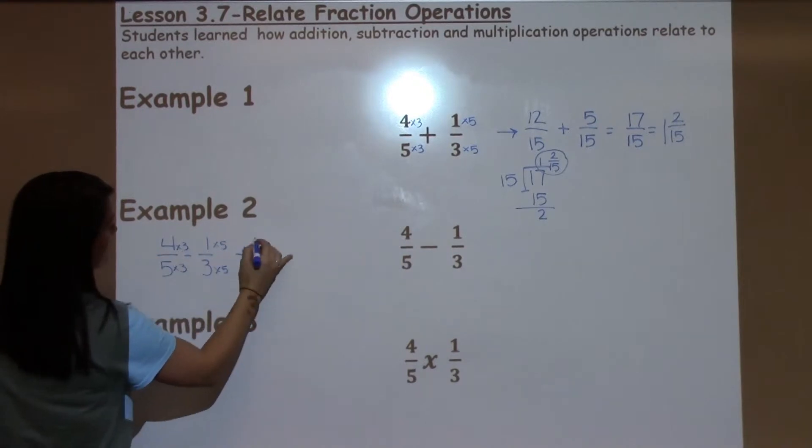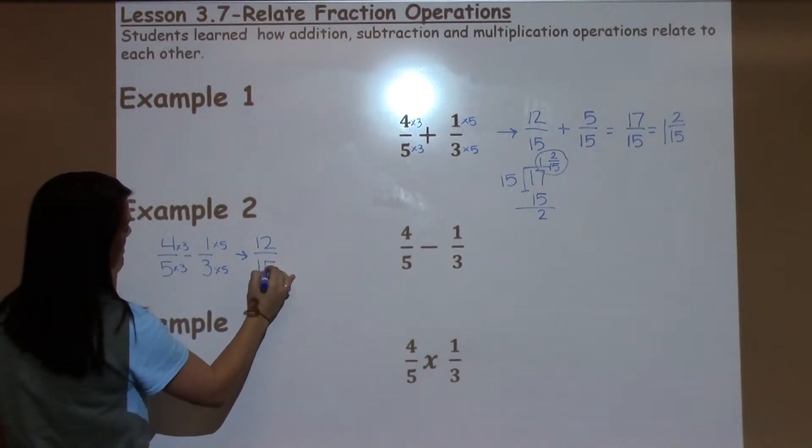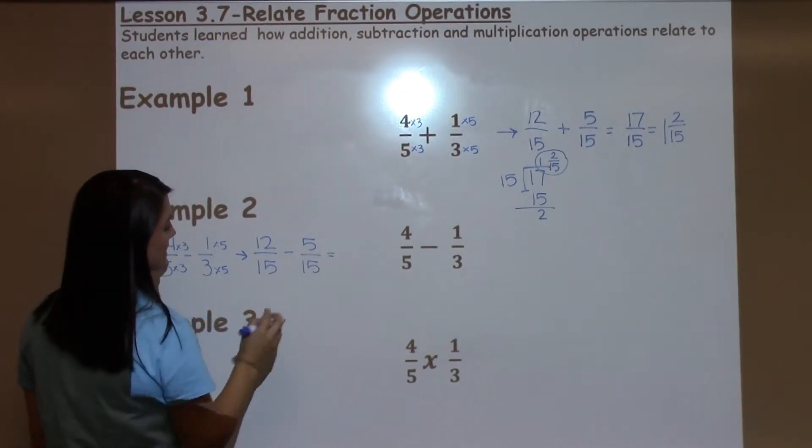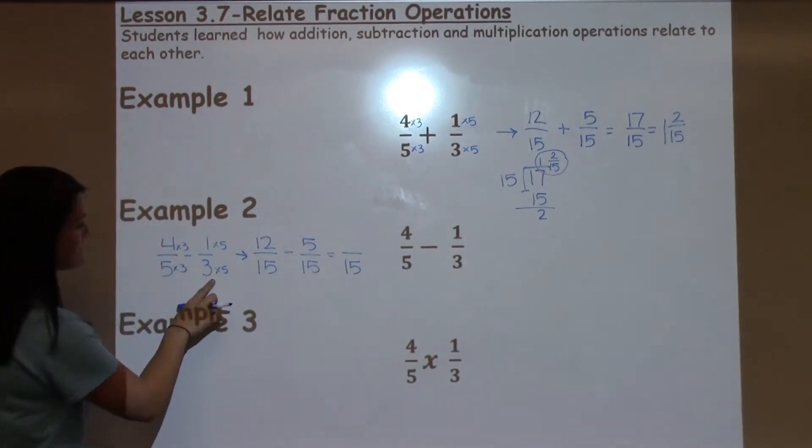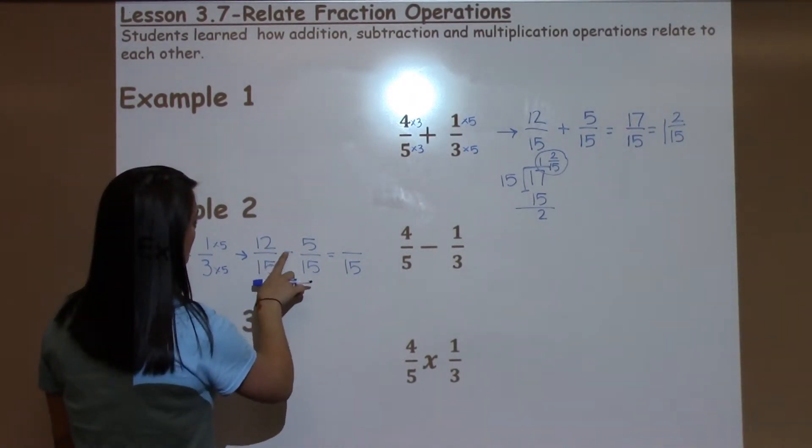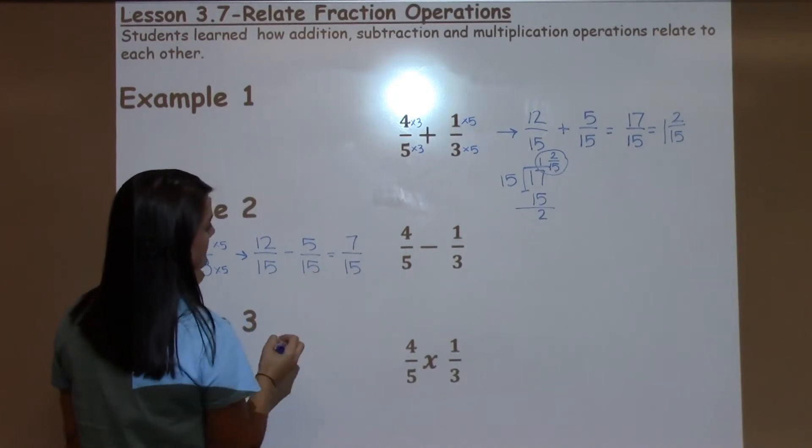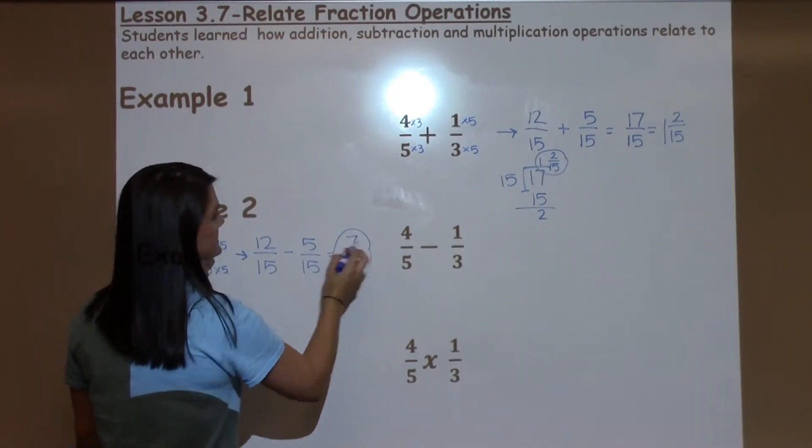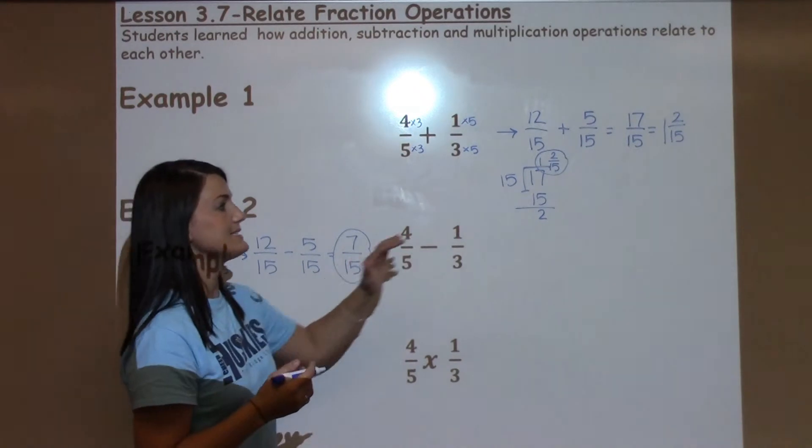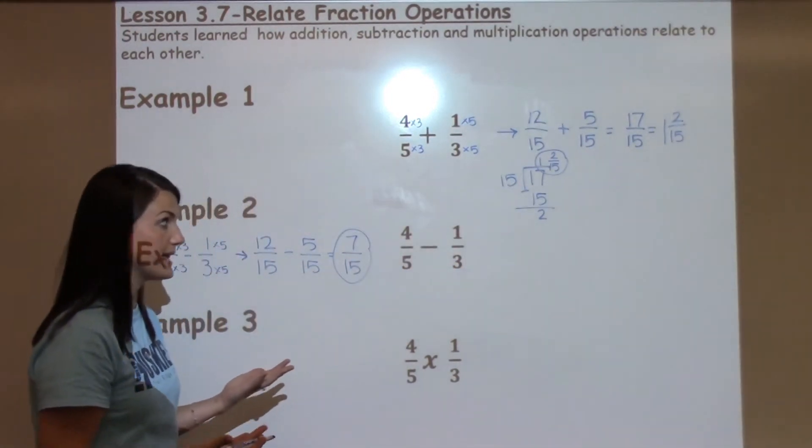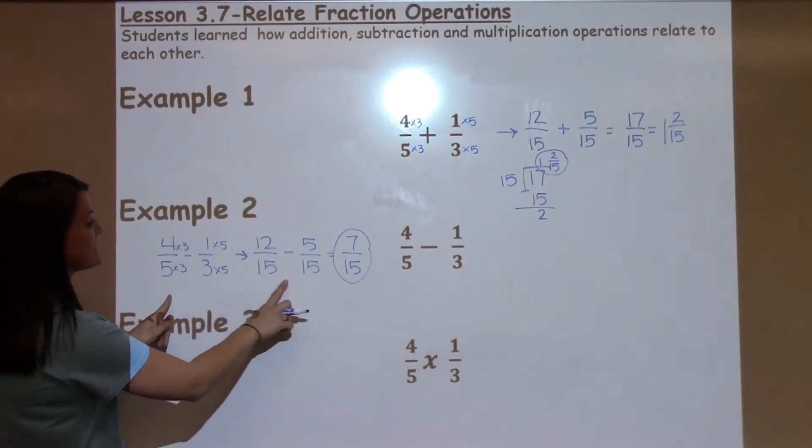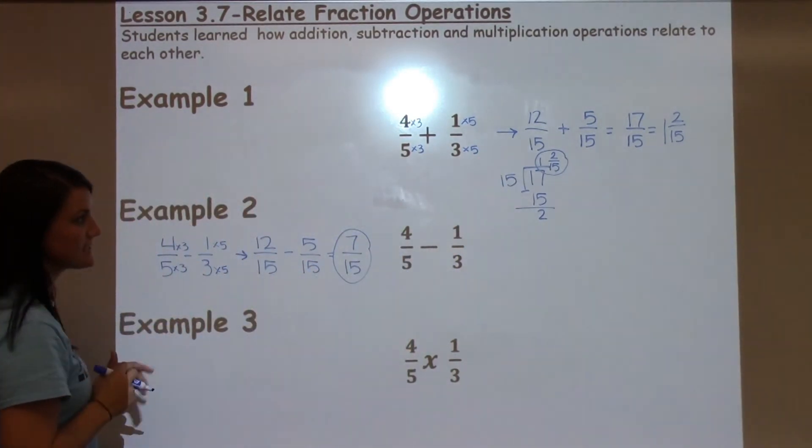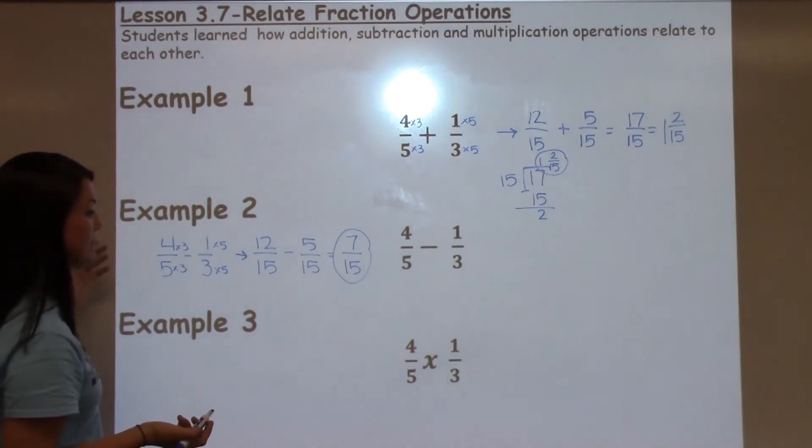Alright, so now I've got 12 15ths again, and then I have 5 15ths. And this time I'm subtracting. My denominators get to stay the same. I worked hard to make them the same so they get to stay the same. And then 12 minus 5 is 7. So my final answer is 7 15ths. So the answer we get isn't necessarily the same, right? Because we're adding in one and subtracting in the other. But the process we follow to get to the numbers that we added or subtracted are exactly the same.